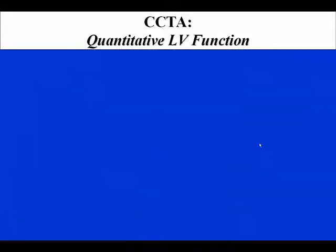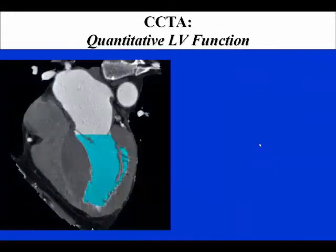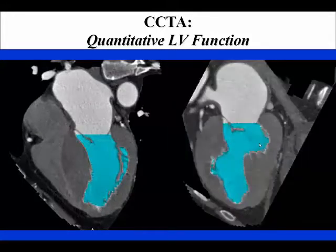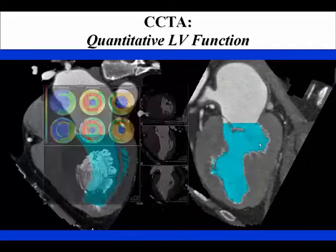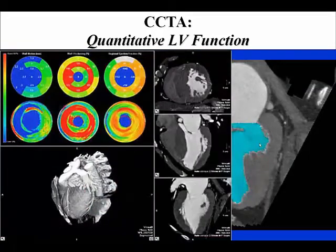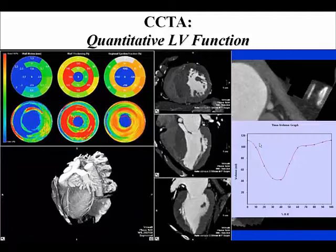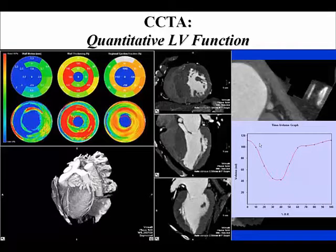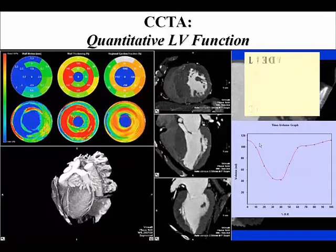Images can be performed in a variety of axes, but they must be done with end-systole and end-diastole. From that, one can get a variety of quantitative information, including a time-volume graph from which one can derive ejection fraction, stroke volume, end-diastolic volume, and end-systolic volume. These can all be quantified, including cardiac output.